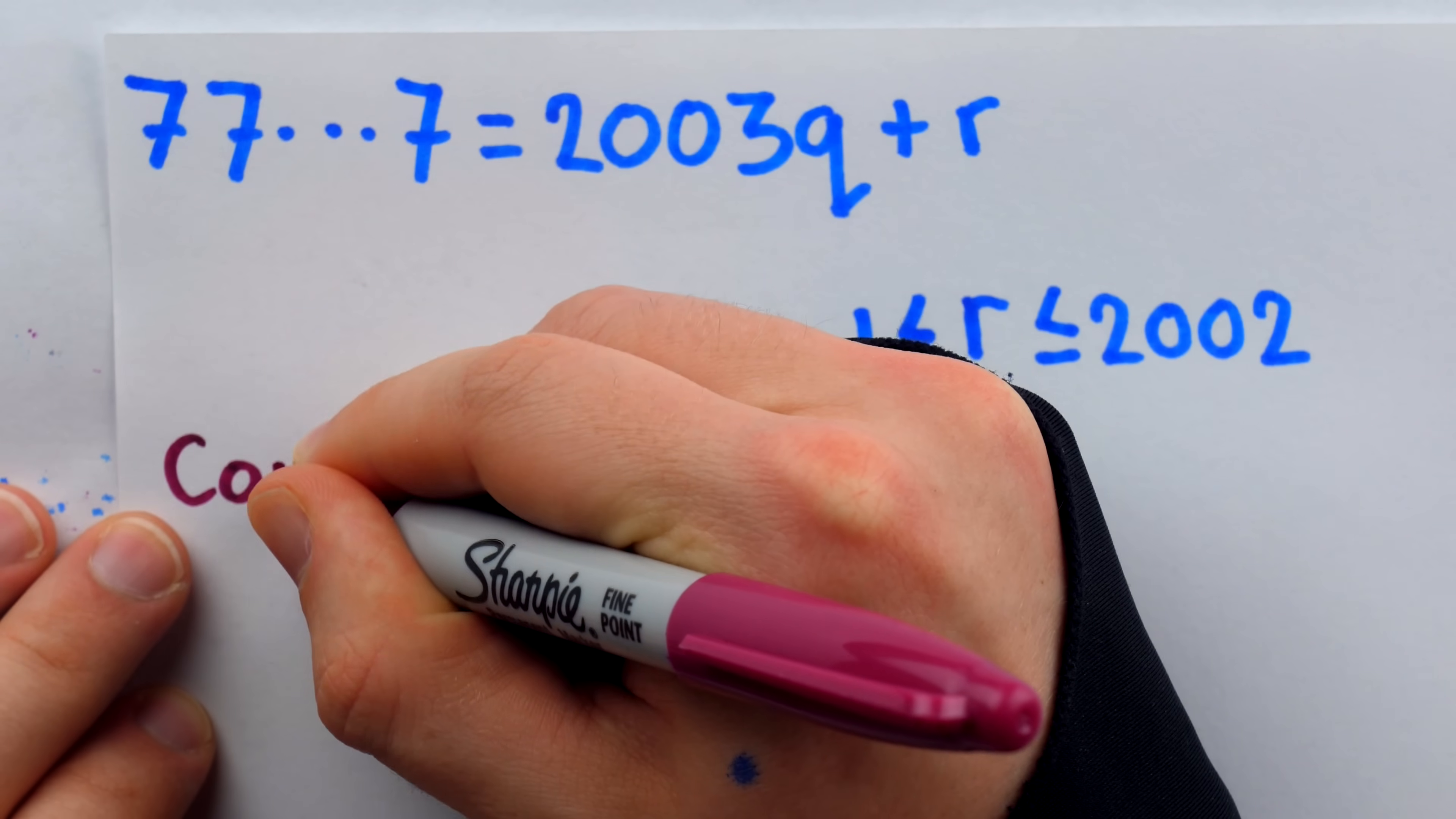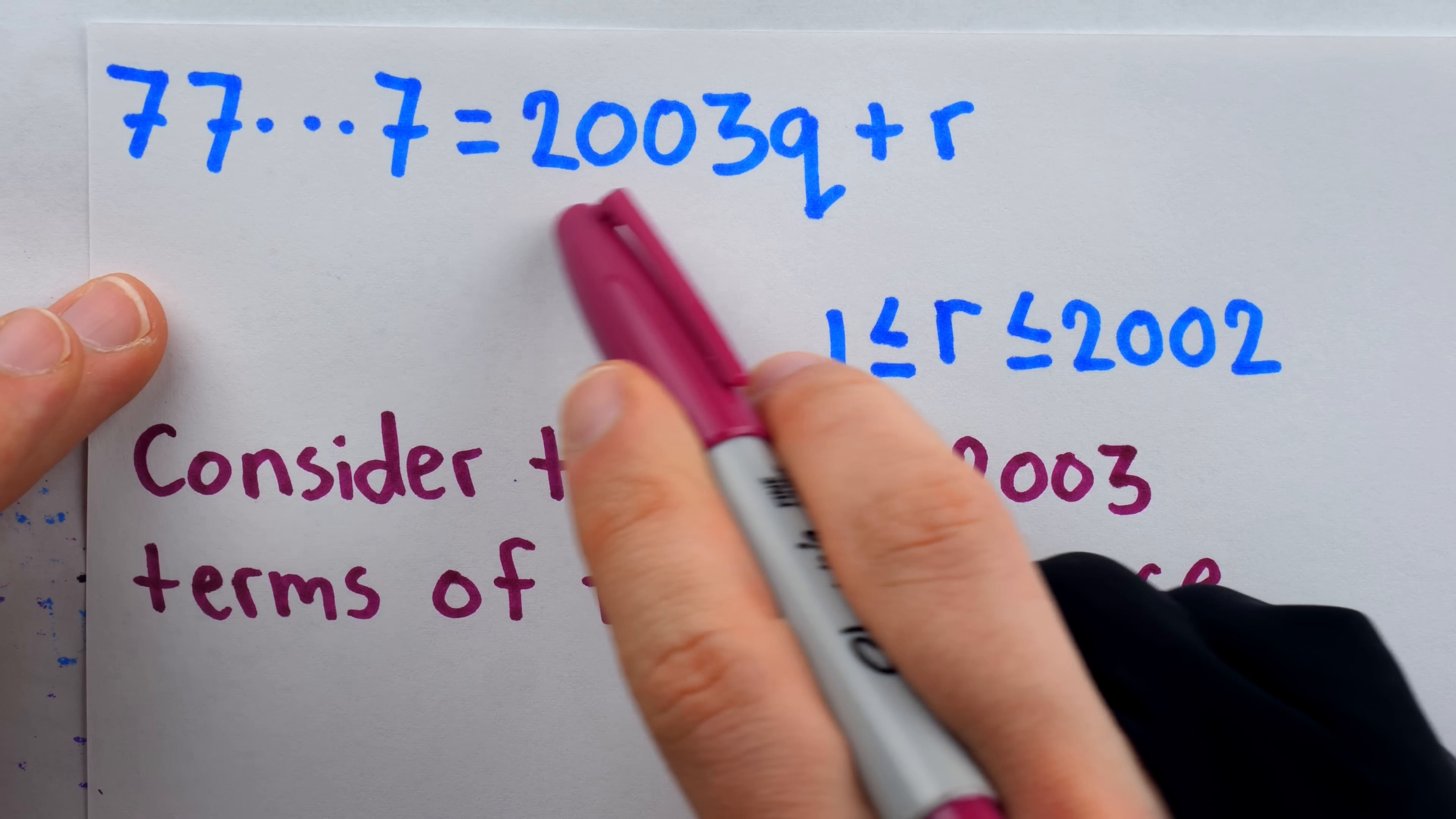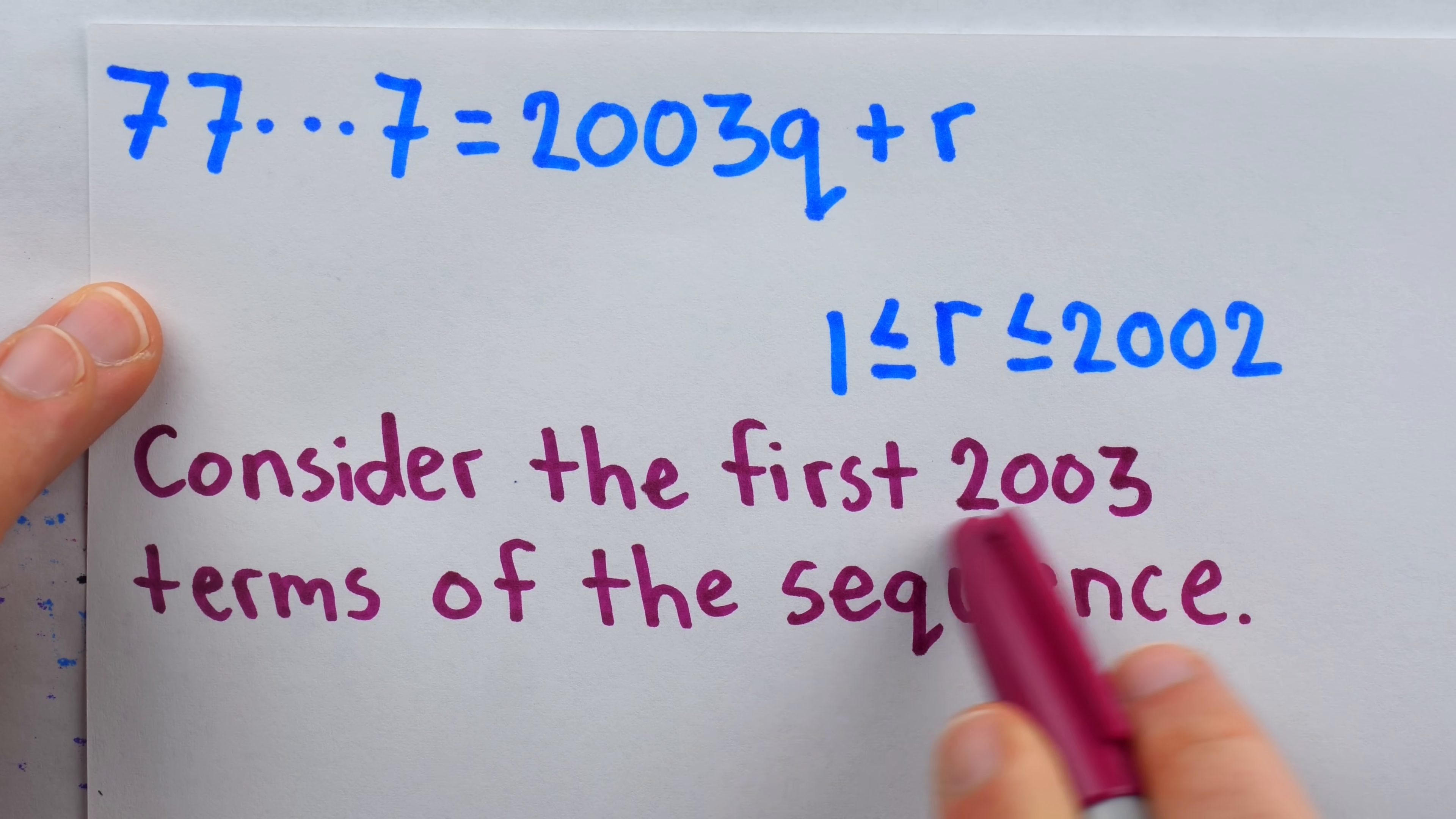Then here's the trick. We're going to consider the first 2003 terms of this sequence. Every one of those 2003 terms has some remainder when divided by 2003. But there were only 2002 possible different remainders a number could have. Thus, at least two of these terms must have the same remainder.